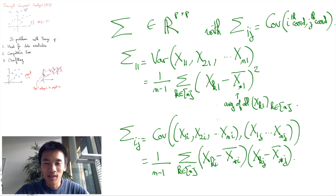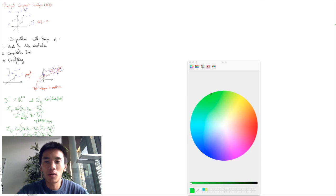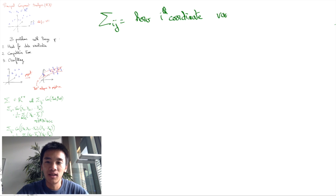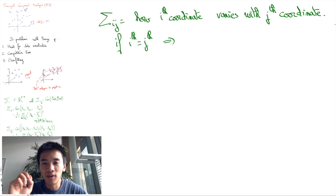What's important to take away from all of it is that sigma_ij really tells us about how the i coordinate varies with respect to the jth coordinate. In particular, if the i and j coordinate actually record the same kind of data, the covariance sigma_ij is going to be huge.